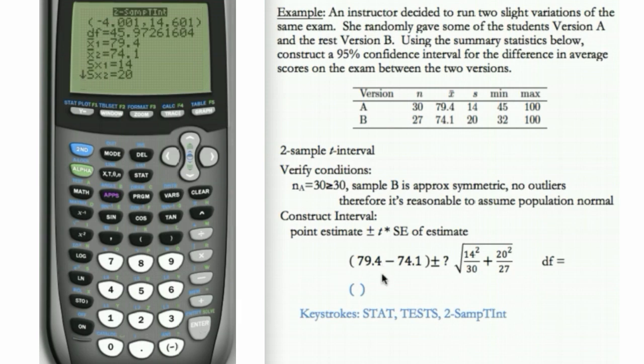And here, we get our interval. So in this case, we get negative 4.0 to 14.6. And notice, it also gives us our degrees of freedom. So we can record that. So that's about 46 degrees of freedom.